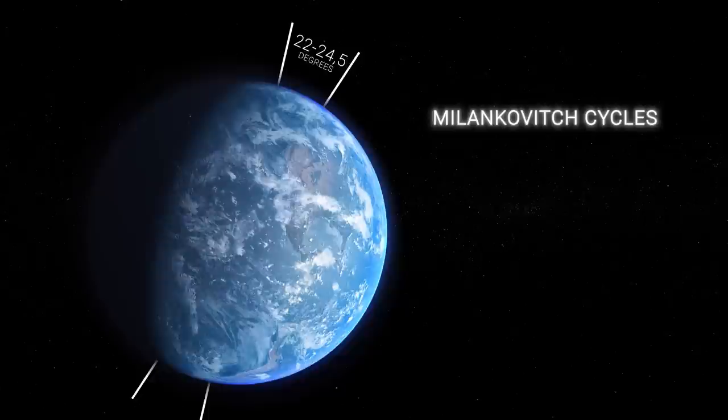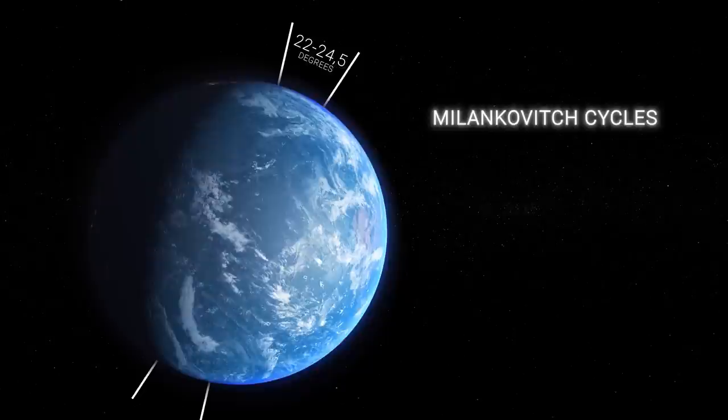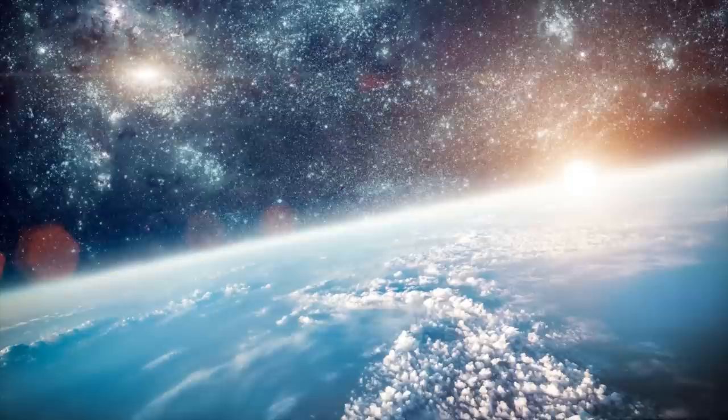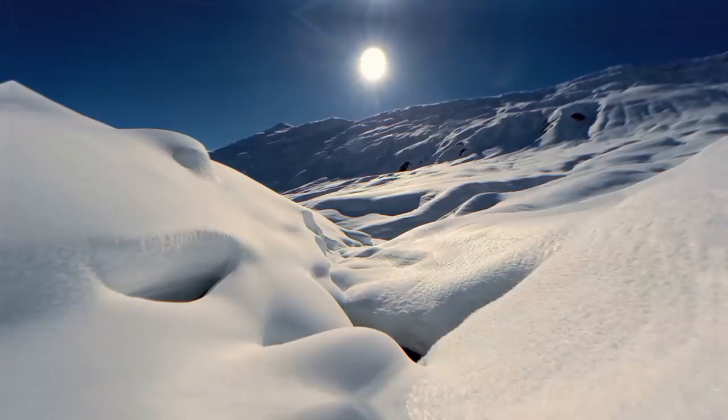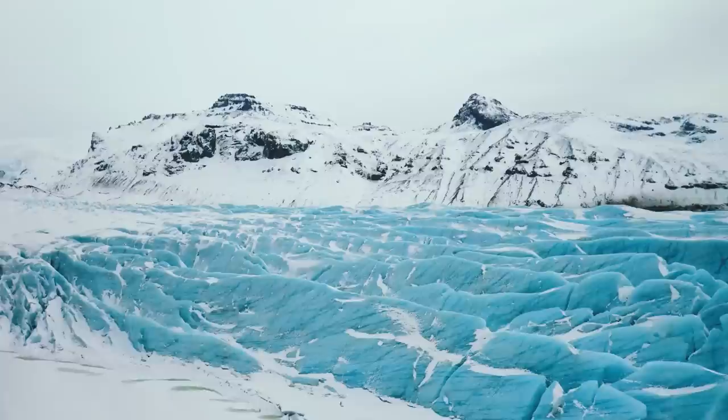One of the aspects of the Milankovitch cycles is the change in the tilt of the Earth's axis, which shifts from about 22 to 24 and a half degrees in a cycle of about 41,000 years. This change in the planet's tilt affects the amount of solar radiation reaching different parts of the Earth's surface, which in turn can affect the timing and intensity of glaciation periods' ice ages.